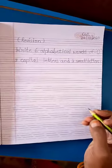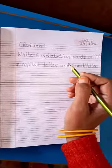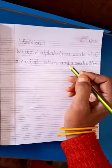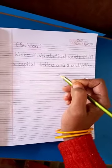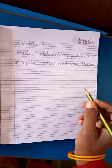Children, complete. Our heading is complete. Now we will write alphabetical words of O, three capital and three small letters. Okay children? You will also write with me.